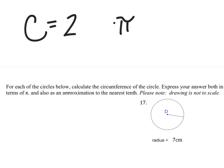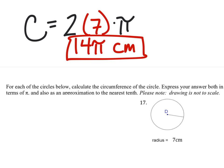So I'm going to replace my radius with what I have in this problem, which is 7. 2 times 7 is 14, so 14 pi in centimeters, this is my exact answer.